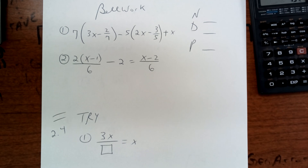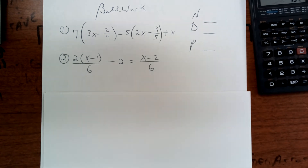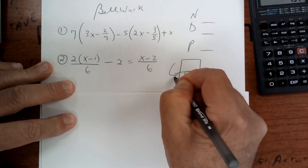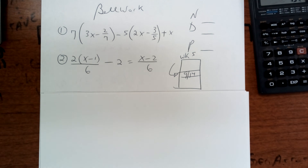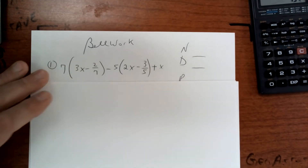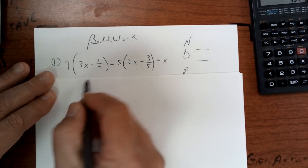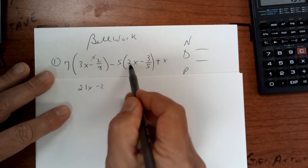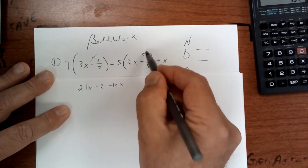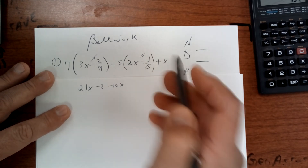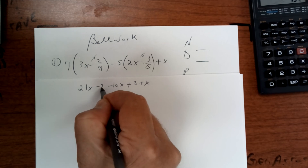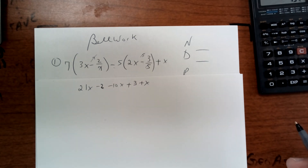Work those two problems — this is week five and today is 9/14, so that goes in the middle. You had both of these on your work yesterday. I would multiply 7 times 3 to get 21x. When you multiply this one by 7, the sevens cancel so you get minus 2. This is going to be minus 10x, and when you multiply this one the fives cancel but a negative times a negative gives positive 3 plus x.